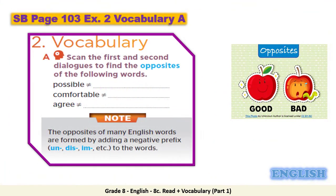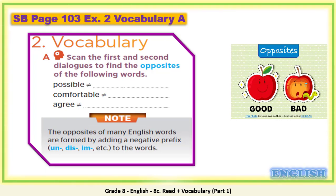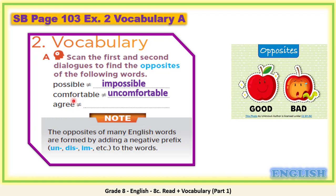Now let's move to page 103, vocabulary exercise number two. Scan the first and second dialogues to find the opposites of the following words: possible, comfortable, and agree. You have three minutes to read and write the opposites. The opposite of possible is impossible. The opposite of comfortable is uncomfortable. The opposite of agree is disagree.